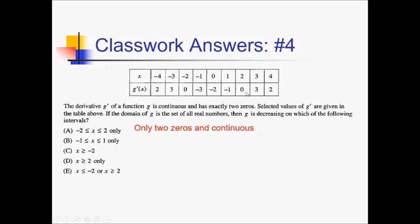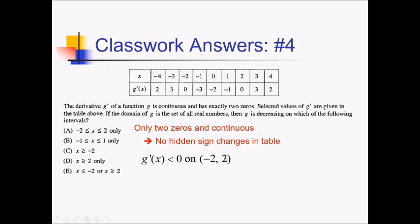They told us we had only two zeros and that g' is continuous. That means there's nowhere else that g' is hitting or crossing the x-axis. So once it starts being negative, it has to stay negative until it gets back to 0. Since it's continuous, it can't take on negative values without us knowing about it. So g' is negative between negative 2 and 2 — no hidden sign changes. That means g, the original function, must be decreasing on the interval from negative 2 to 2, which is answer choice A.